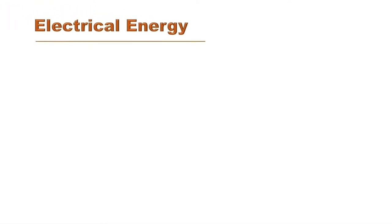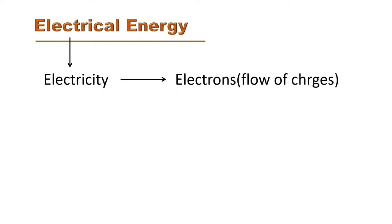The next form of energy is electrical energy. The word 'electrical' is derived from electricity, and 'electro' is derived from electrons. Electrons are the basic charged particles present within every atom. When these charges flow, they produce electrical energy. The energy that we get from electricity is called electrical energy.